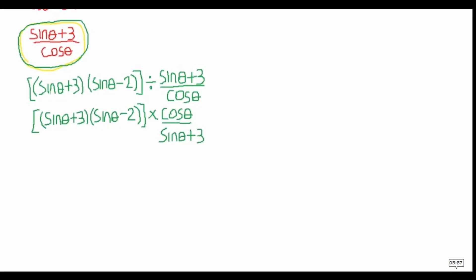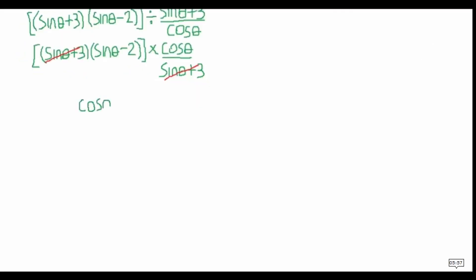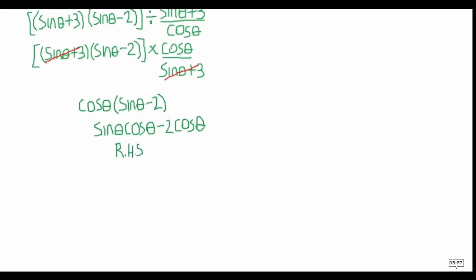The denominator sine theta plus 3 can cancel with the sine theta plus 3 in the other part, leaving just cos theta multiplied by sine theta minus 2. When you multiply them out it gives sin theta cos theta minus 2 cos theta. Hence the left hand side has been shown to equal the right hand side — they are equivalent.